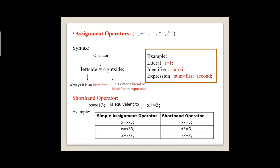Next, shorthand operators: plus-equal, minus-equal, star-equal, divide-equal — these are called compound assignment operators. For example, x = x + 3 can be written as x += 3, where plus-equal is the compound assignment operator. Similarly, x = x - 3 becomes x -= 3; x = x * 3 becomes x *= 3; and x = x / 3 is equivalent to x /= 3.